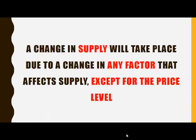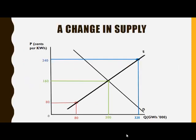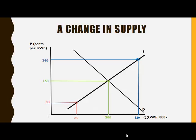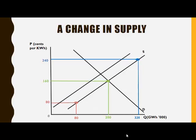A change in supply will take place due to a change in any factor that affects supply, except for the price level. We can illustrate it by a rightward shift of the supply curve or a leftward shift of the supply curve.